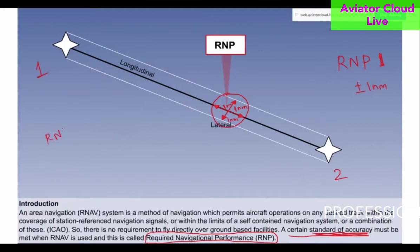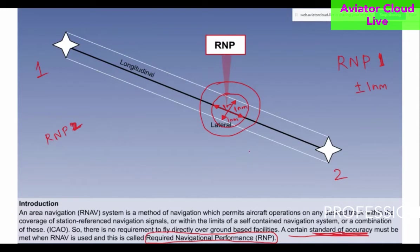So what if I say RNP 2? It means that it has to be within a 2 nautical mile radius. That is the meaning of RNP 2. A certain standard of accuracy must be met where RNP is used, and that is called Required Navigation Performance.